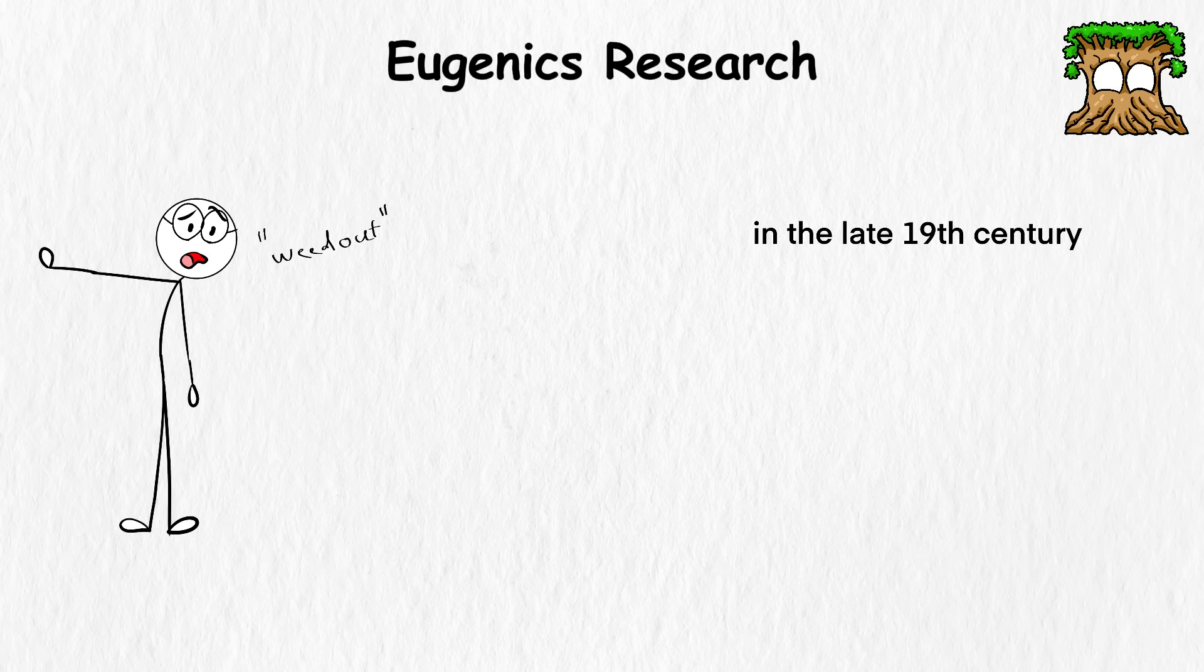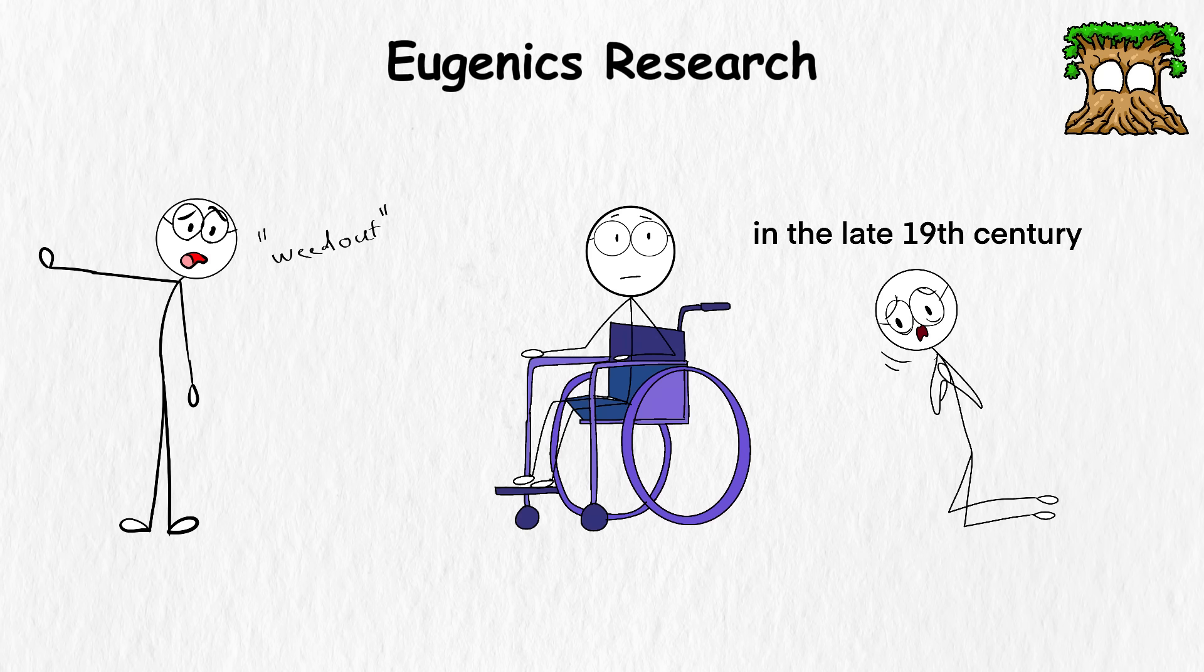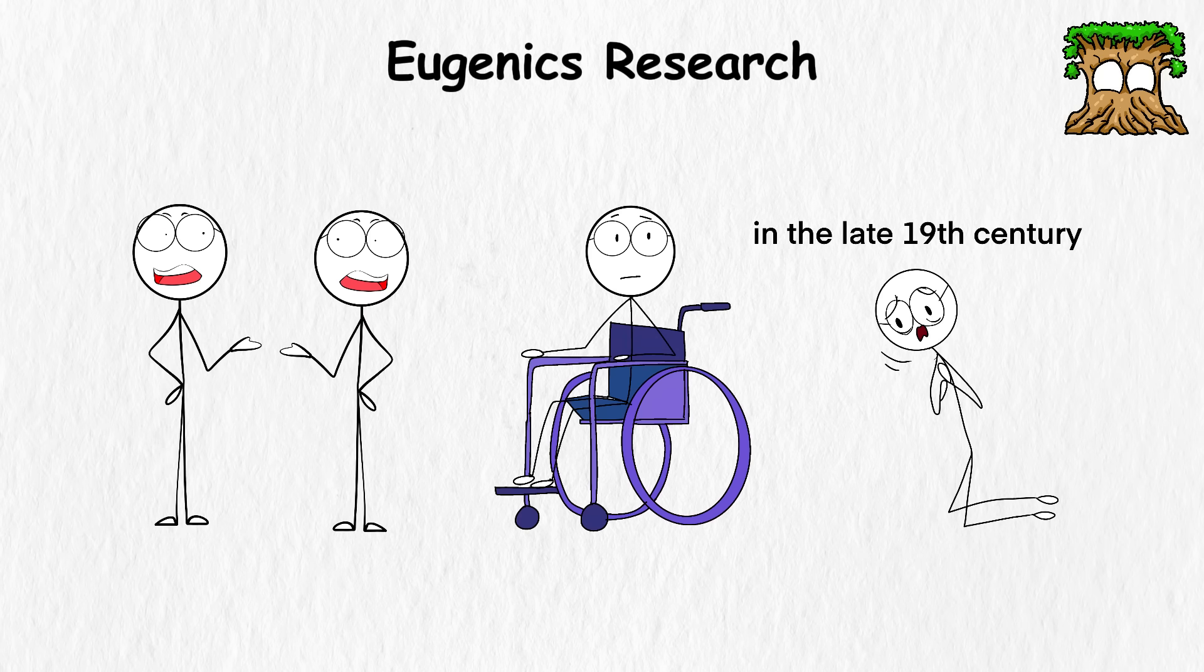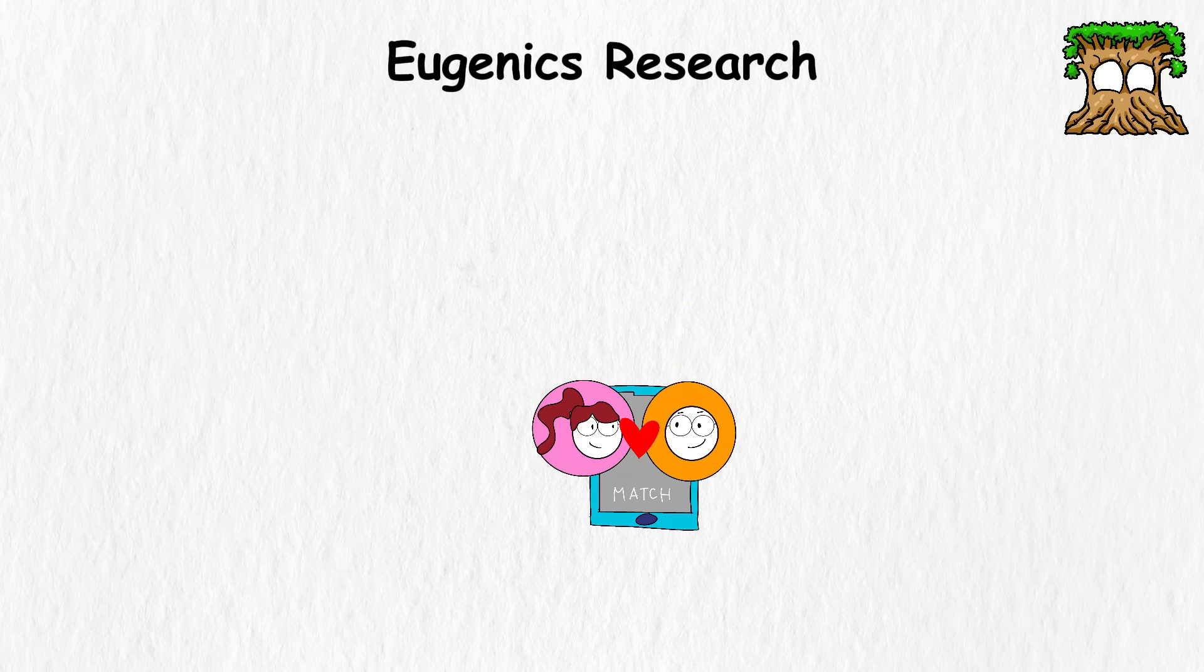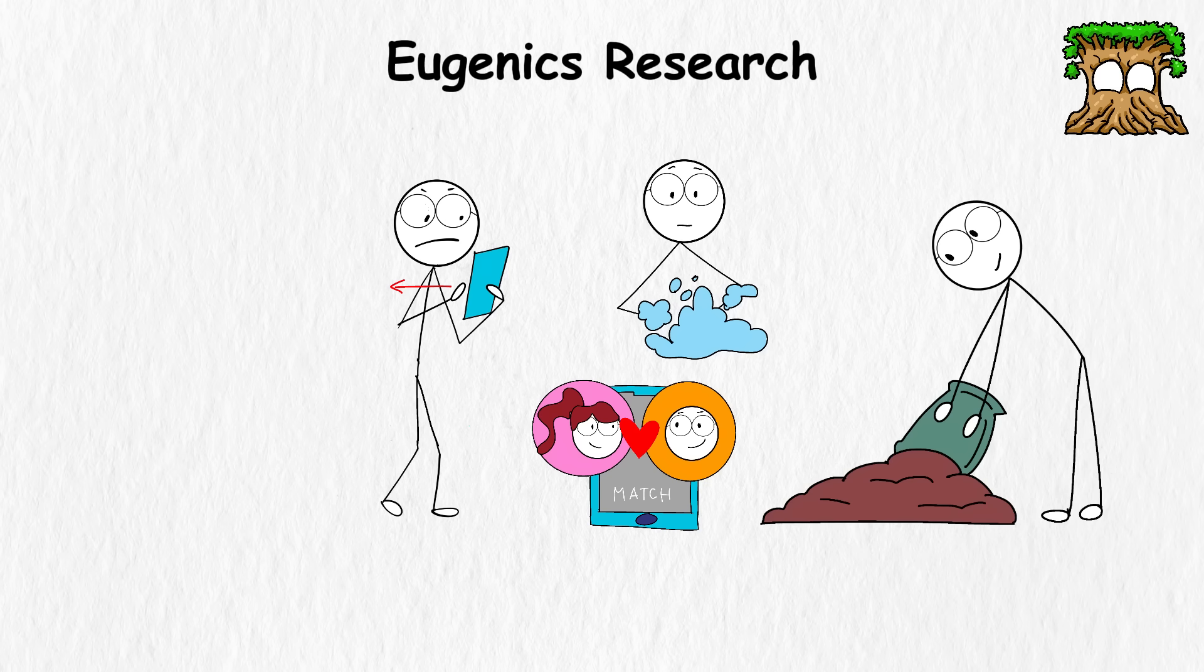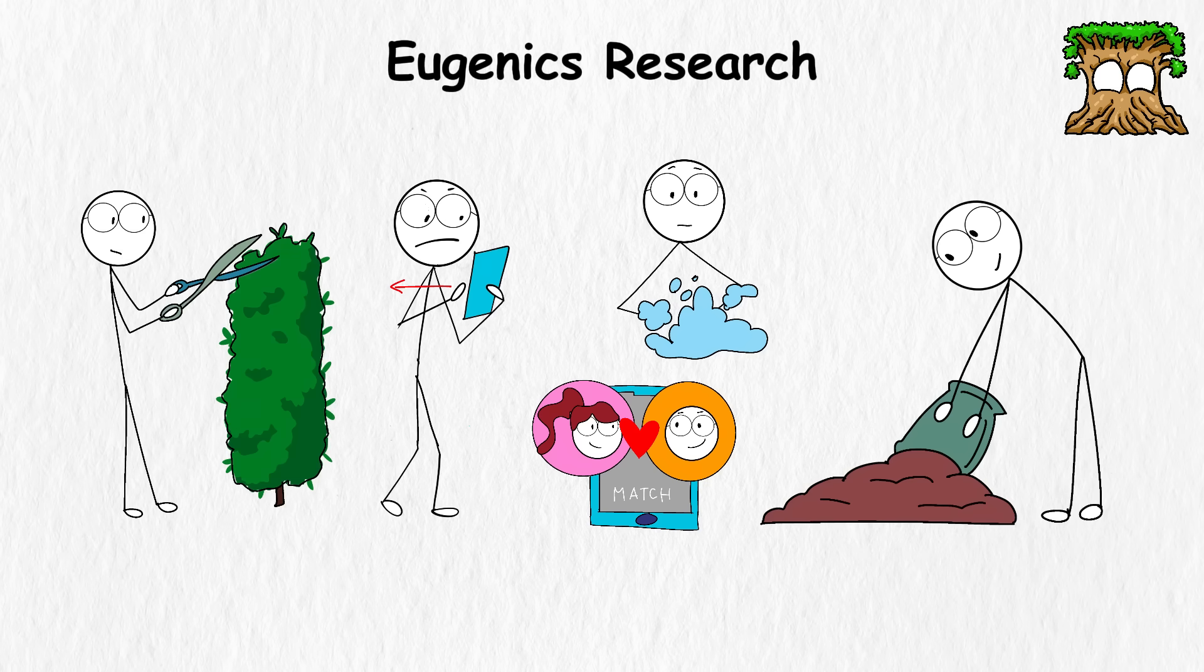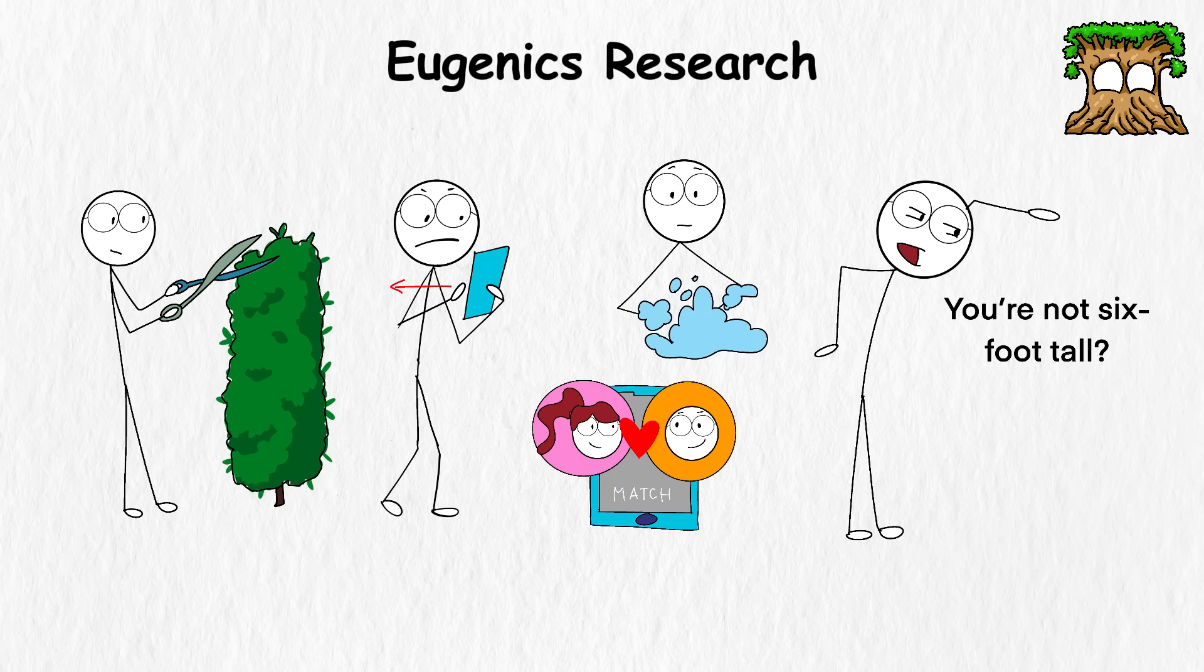Beginning in the late 19th century, eugenicists believed they could weed out undesirable traits such as diseases, disabilities, or traits they deemed socially unfit and promote desirable ones. Think of it as a matchmaking app, but instead of swiping left, they sterilized people. In theory, it sounds like selective gardening, but in practice, there was nothing moral about pruning or cutting out people who had undesirable traits.